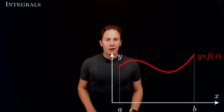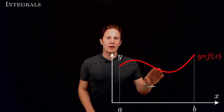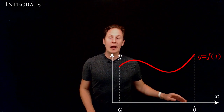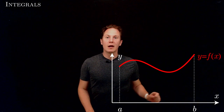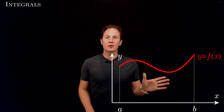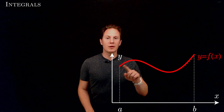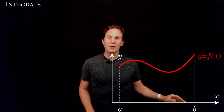Let's see how limits can help us solve the area problem — that is, to find the area under the graph of a function over an interval. Here you can see the graph of a function f in red, plotted over an interval ab along the x-axis, and our aim is to find the area of this region that is enclosed between the graph of the function and the interval ab.